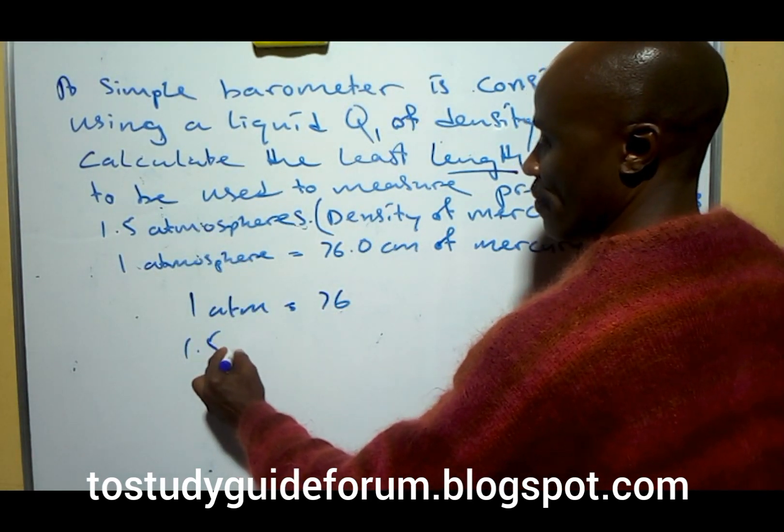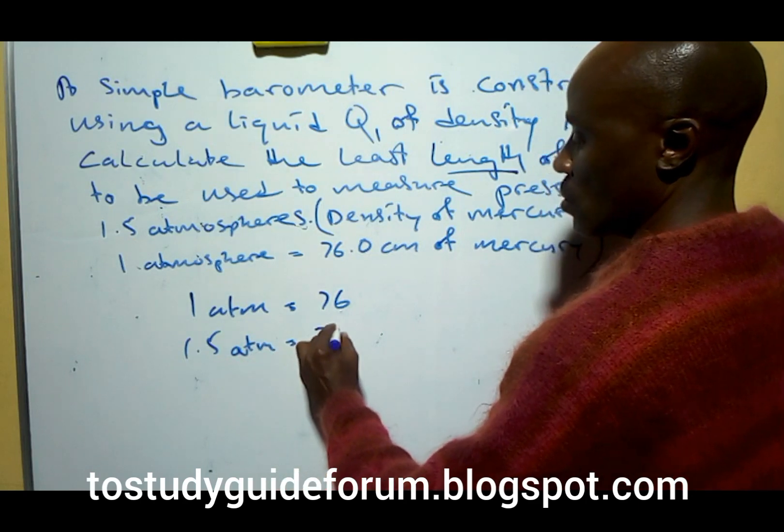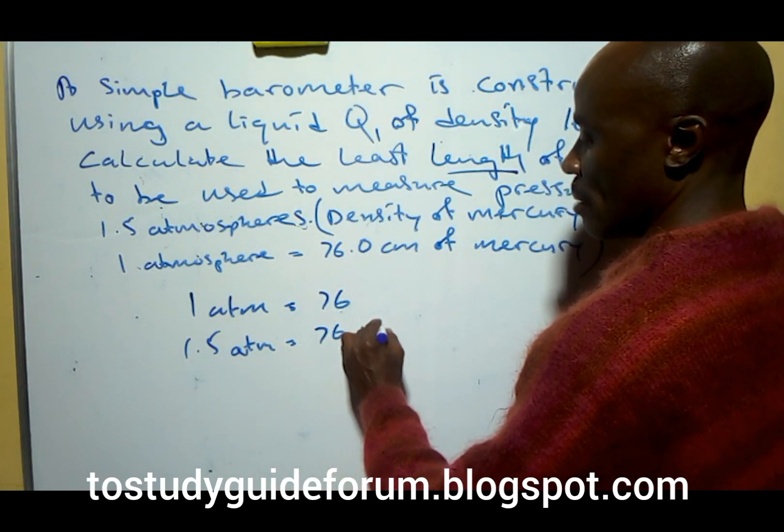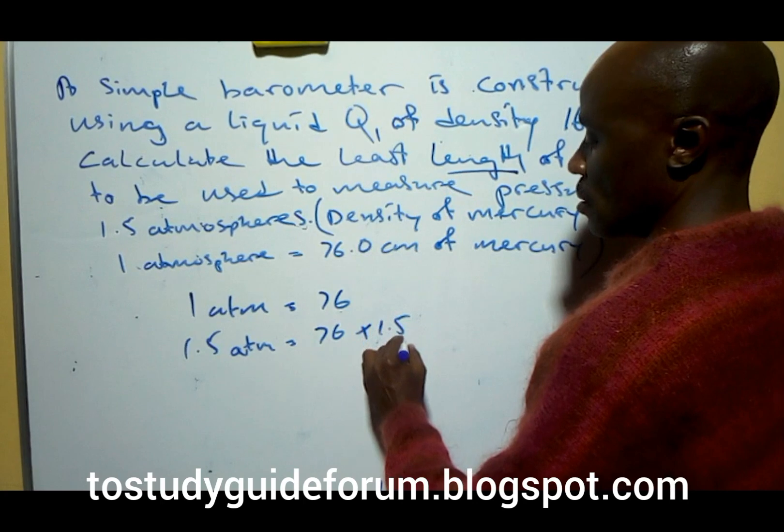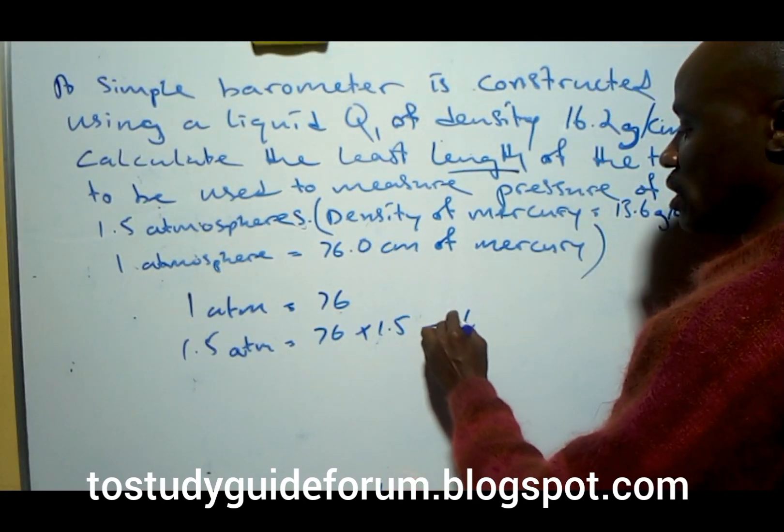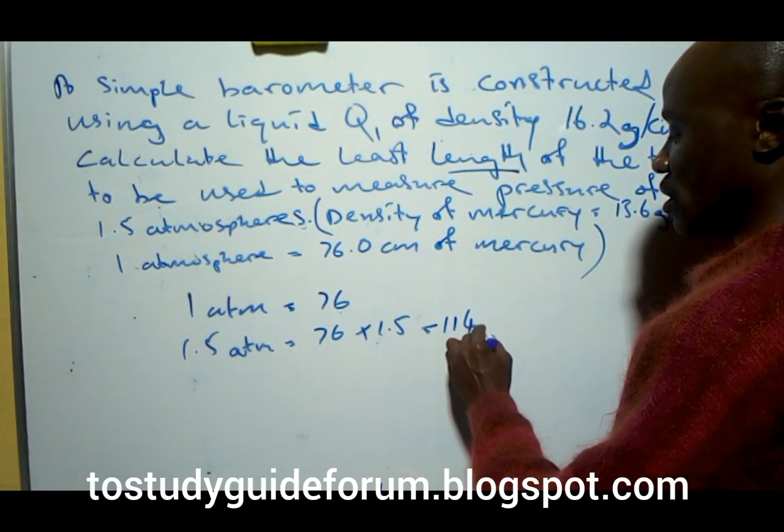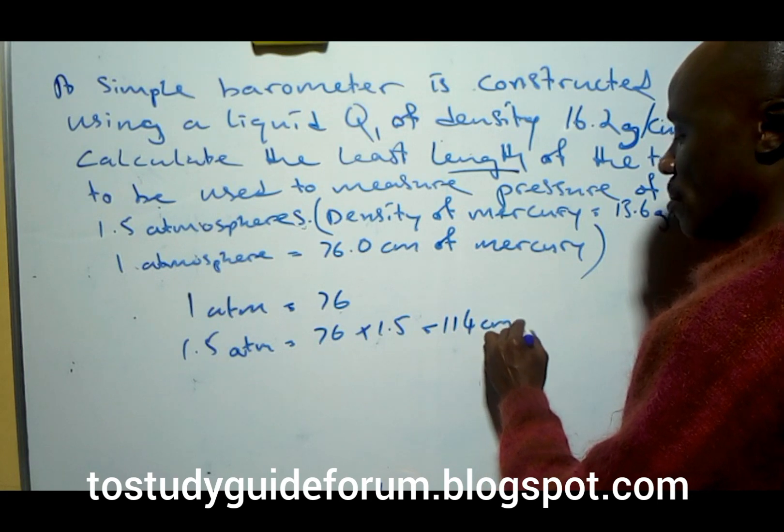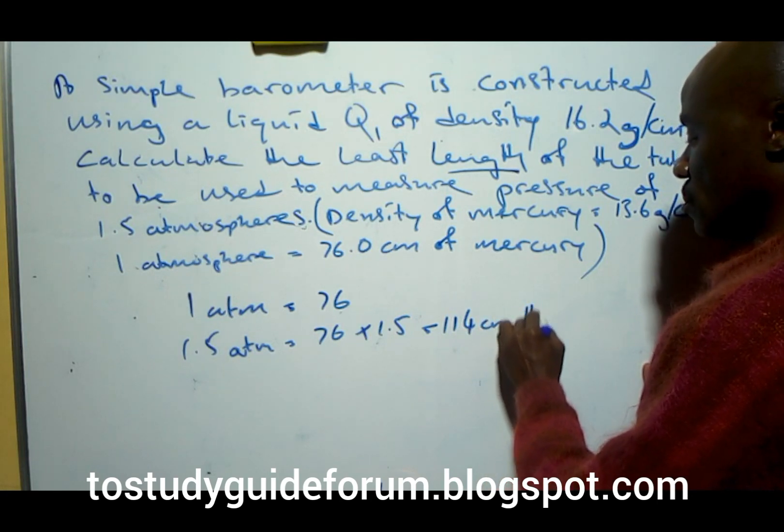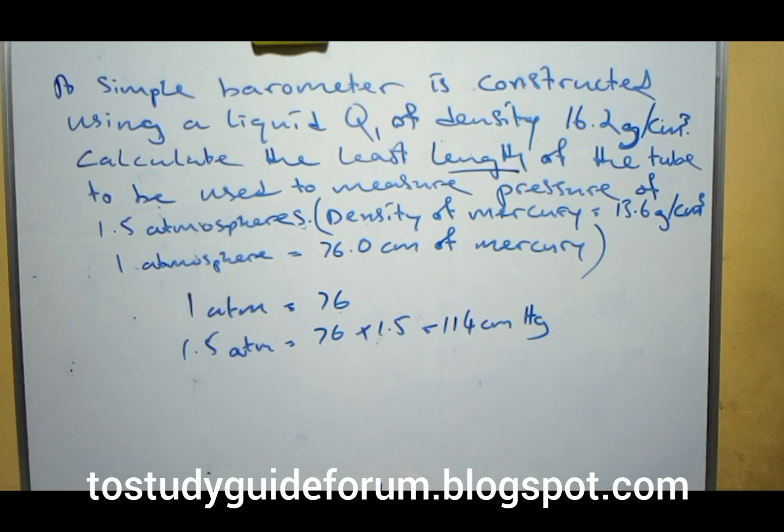1.5 atmosphere is equal to times, that will give us 114 cm of mercury, that is what we have.